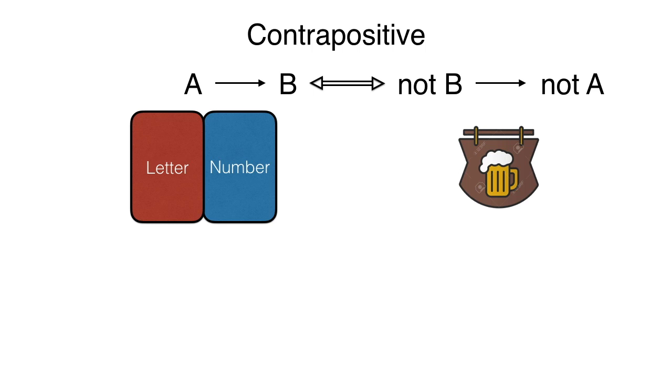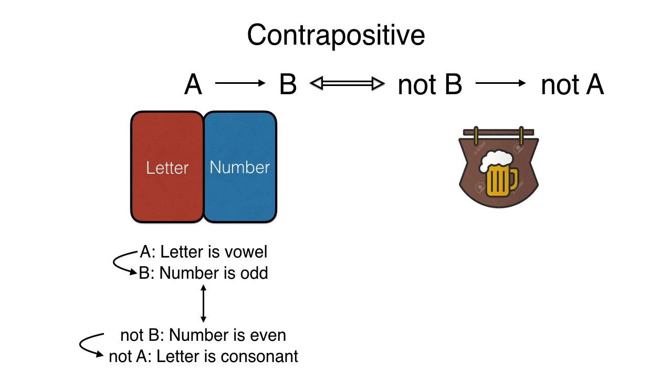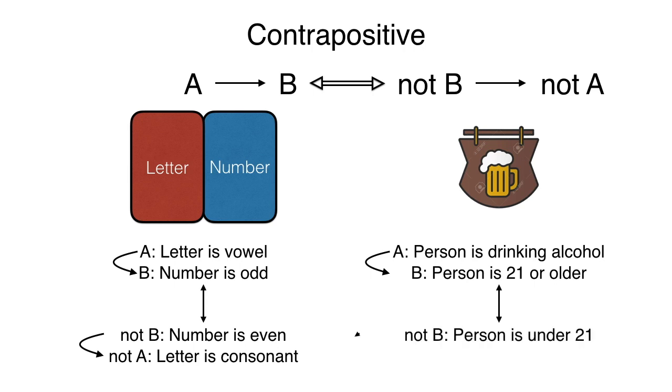In our case, we have that the events are A is that the letter is a vowel and B is that the number is odd. This is equivalent to saying that if the number is even, then the letter must be a consonant. And in the bar case, the events are the following. A is that the person is drinking alcohol, and that implies that B, the person is 21 or older. And this is equivalent to saying that not B, if the person is under 21, implies not A, that the person is not drinking alcohol.